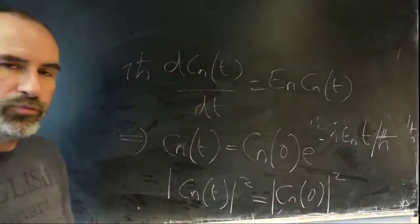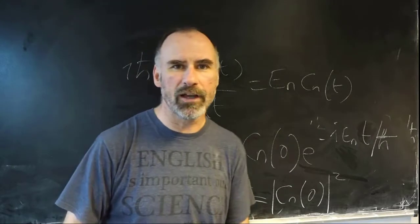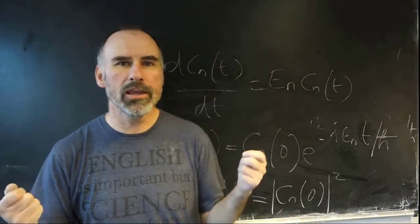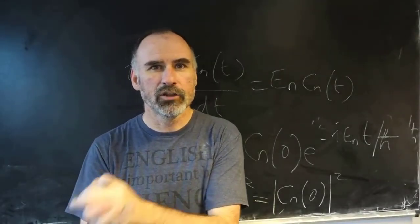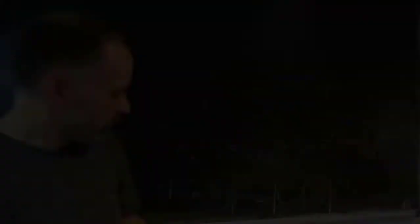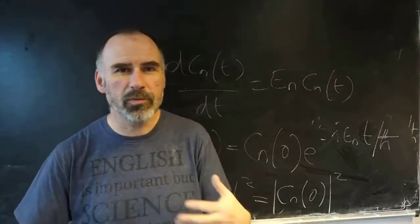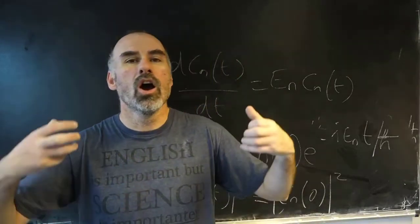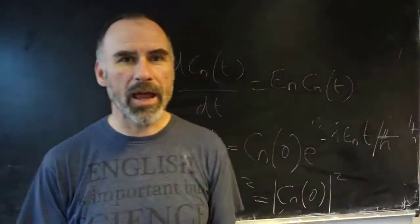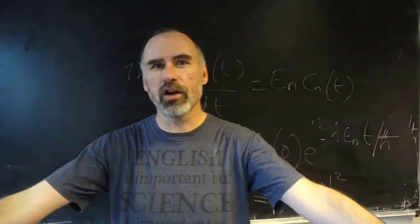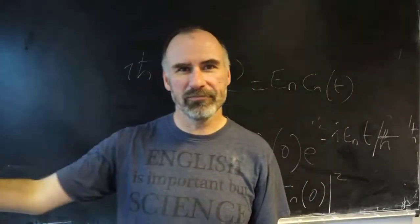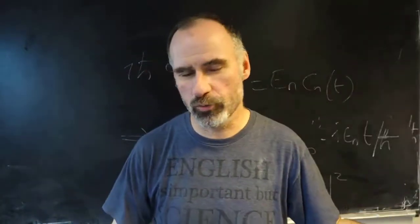The probabilities - specifically the probabilities for the energy eigenvalues - don't change in time. The expectation value of the Hamiltonian, the expectation value of energy, is time-independent. It's all to do with that initial mixture. Our coefficients, which tell us the probability of measuring each energy eigenvalue, are time-independent - of course, in the absence of making a measurement. This is all about the system evolving in time going about its own business without a measurement being made or interaction with its environment.